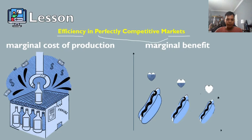Next, we also have marginal benefit — also one of the questions from our pre-test. The marginal benefit is the maximum amount a consumer is willing to pay for an additional good or service. It is also the additional satisfaction or utility that a consumer receives when an additional good or service is purchased. The marginal benefit for a consumer tends to decrease as consumption of the good or service increases.